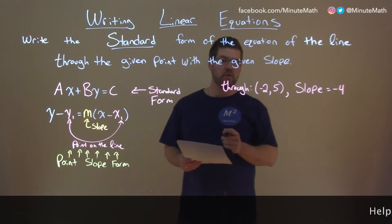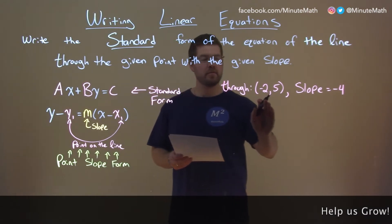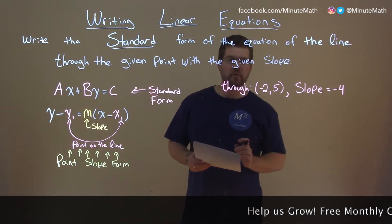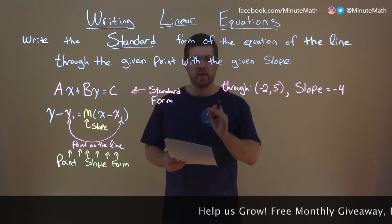So if I was given this problem: through negative 2 comma 5, and our slope is negative 4, and we want to write this in standard form.